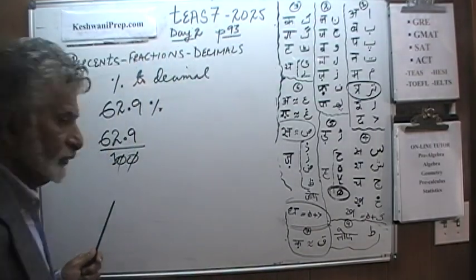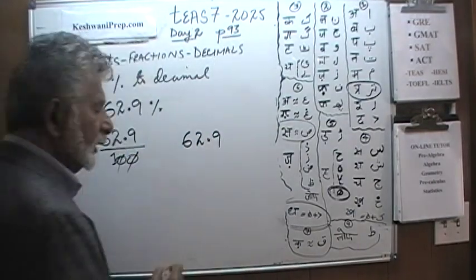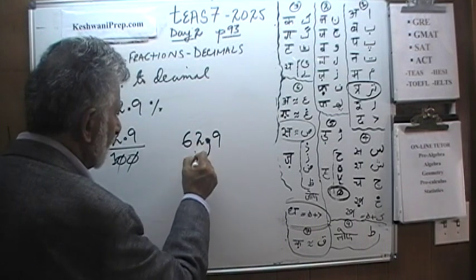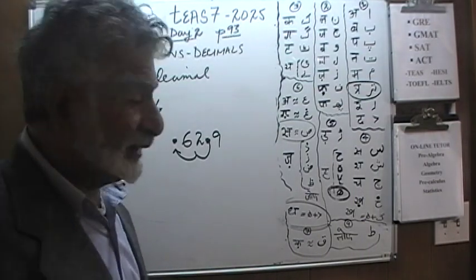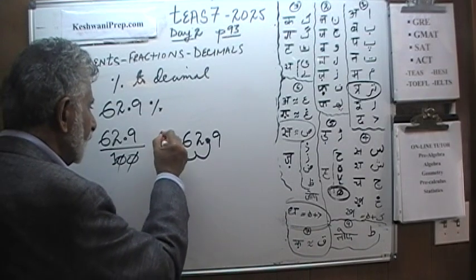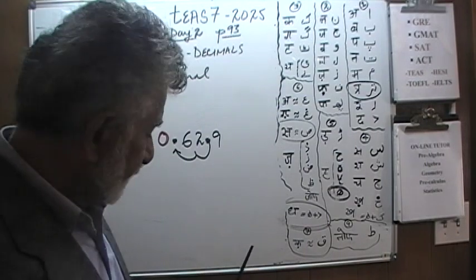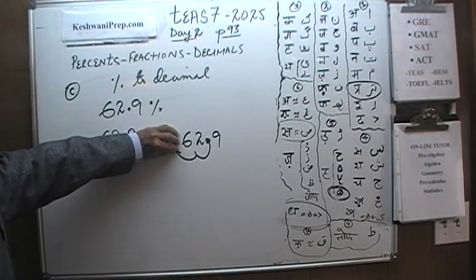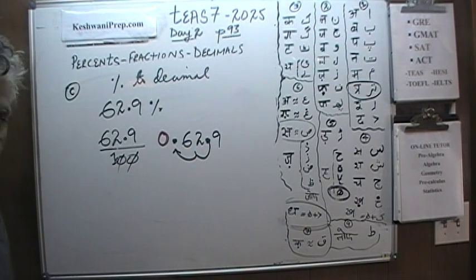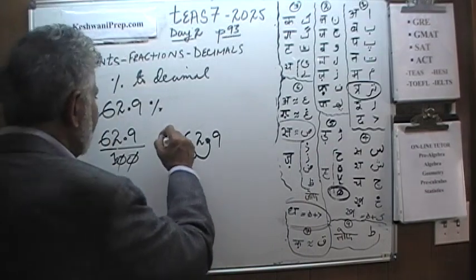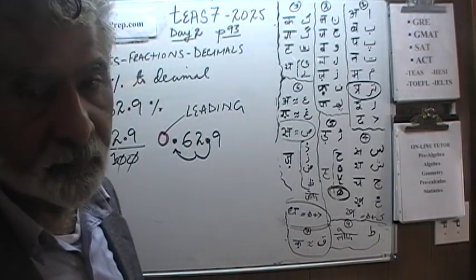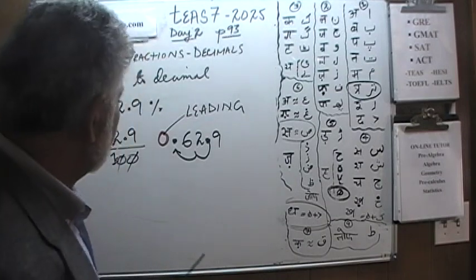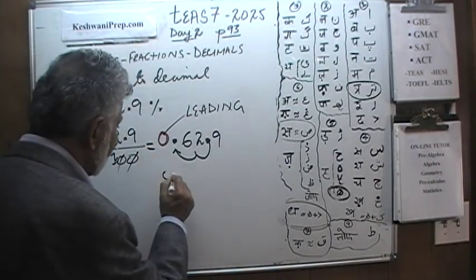So we look at 62.9. We are going to pick up the decimal and move it to the left two places — one, two — and it ends up here. To draw attention to the fact that we have a decimal there, we put a leading zero. The leading zero is there just for convenience, to make sure the reader does not read this as 629. We want to draw their attention to the fact that it is .629. So 62.9 divided by 100 becomes 0.629.